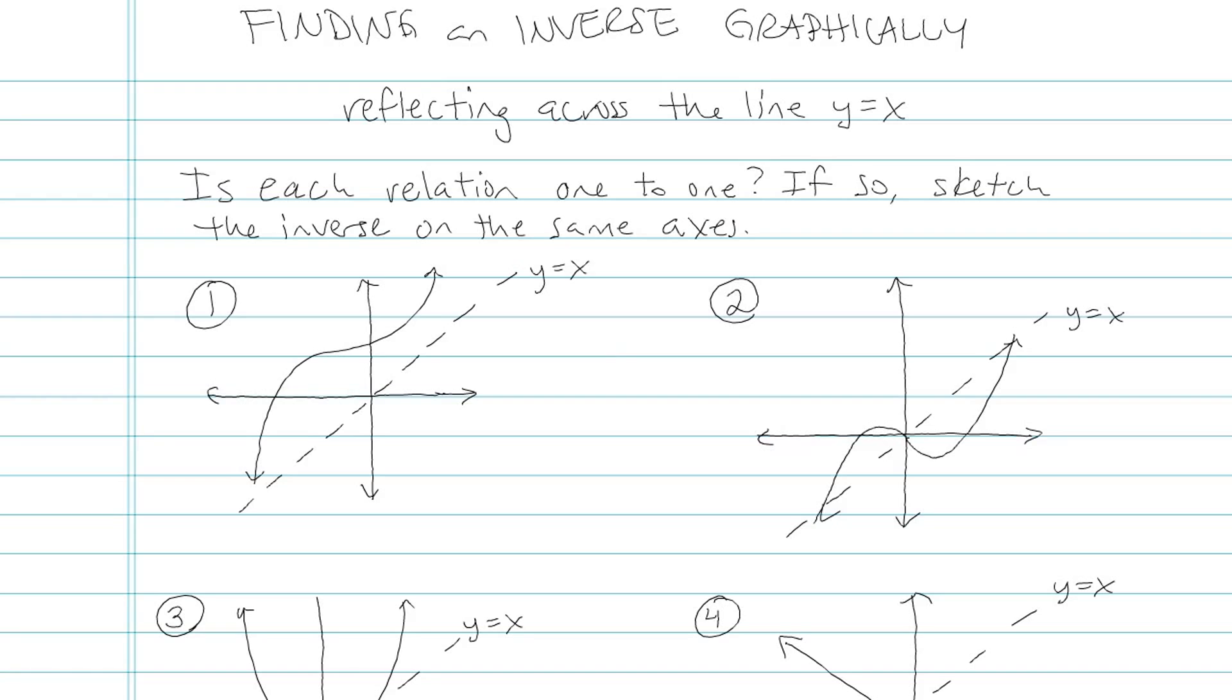Okay, so for each problem, we're asked, is the relation 1 to 1? If so, sketch the inverse on the same axes. 1 to 1 means it passes the horizontal line test. So let's go through each one and see if it passes the horizontal line test before we do any sketching.